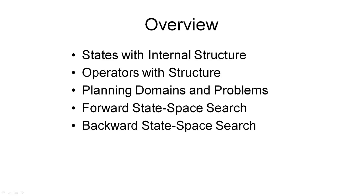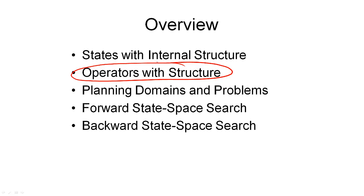We have seen what the STRIPS representation for world states looks like. The internal structure is represented as a set of ground atoms where each atom expresses a relation that must hold between objects in the domain. The next step is to look at operators with internal structure and actions that are instances of these operators.